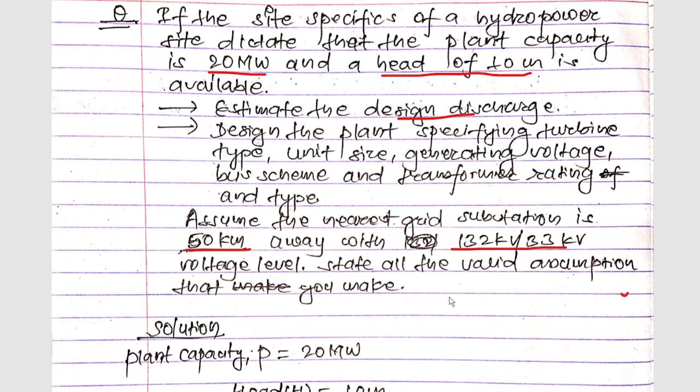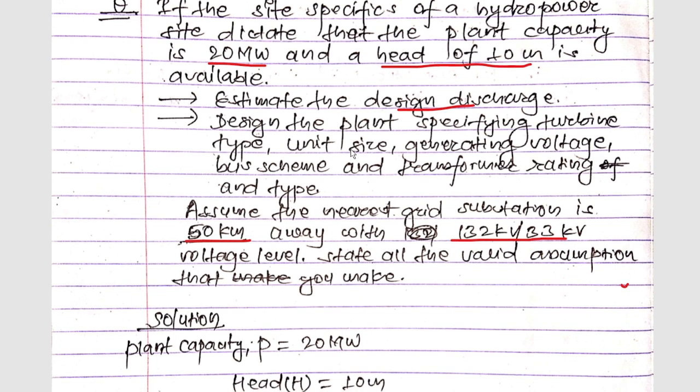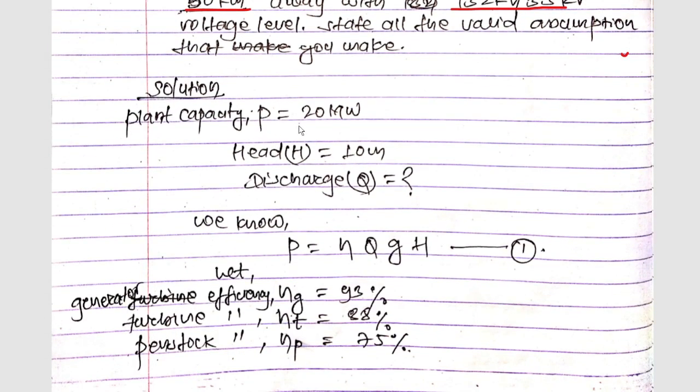Starting the solution: the plant capacity P is 20 megawatts and the head H is 10 meters. We need to determine the discharge Q.